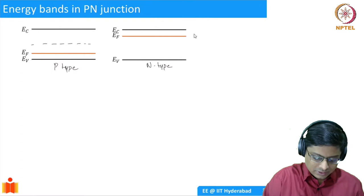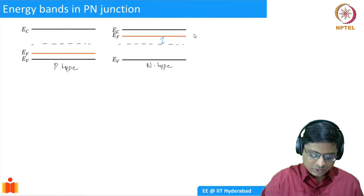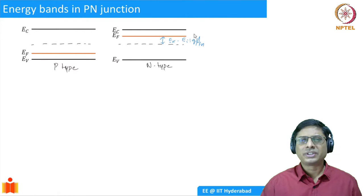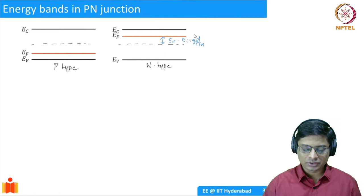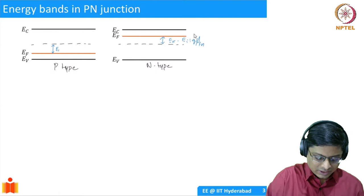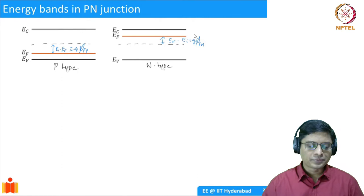This distance is going to be Ef minus Ei, which I'll denote as q times phi_fn for the n-type region. Basically, phi is a potential — multiplying by q gives energy. Similarly for the p-type region, it is Ei minus Ef, which I'll call q times phi_fp — essentially the distance of the Fermi level from Ei expressed in volts.